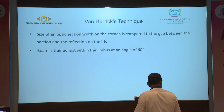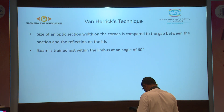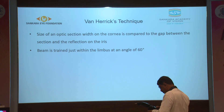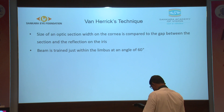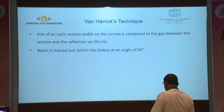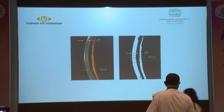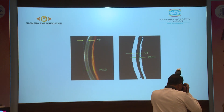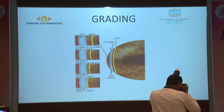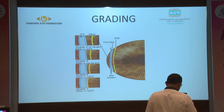A more common technique used for grading anterior chamber depth is Van Herrick's technique on slit-lamp. The size of an optic section width on the cornea is compared to the gap between the section and the reflection on the iris. The beam is placed just within the limbus at an angle of 60 degrees, and the corneal thickness and the dark optical section are compared and graded from 1 to 4. Grade 1 is when peripheral anterior chamber depth is less than one-fourth the corneal thickness.